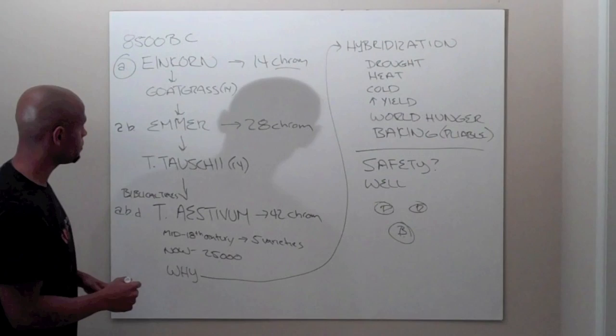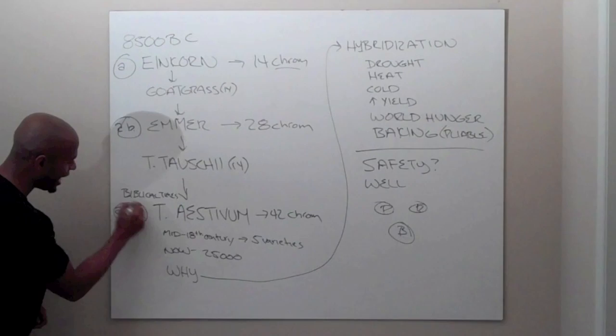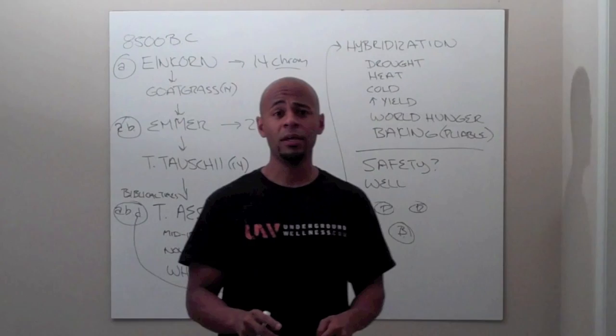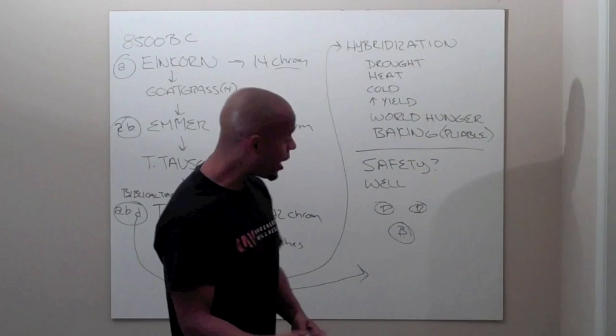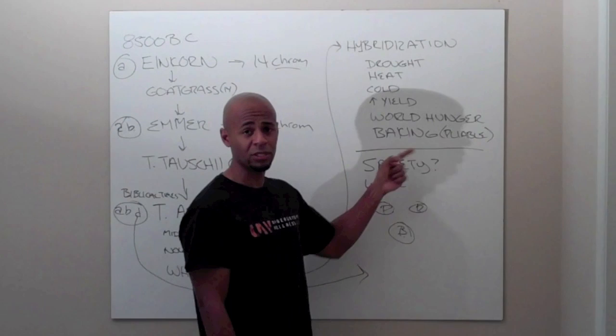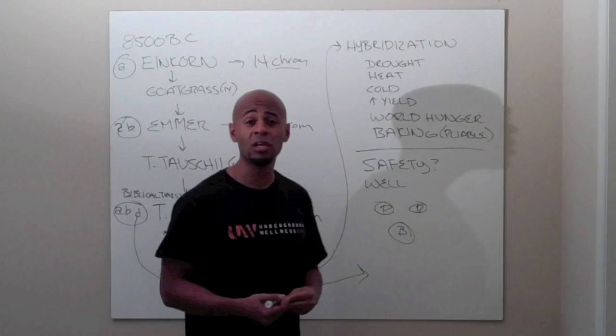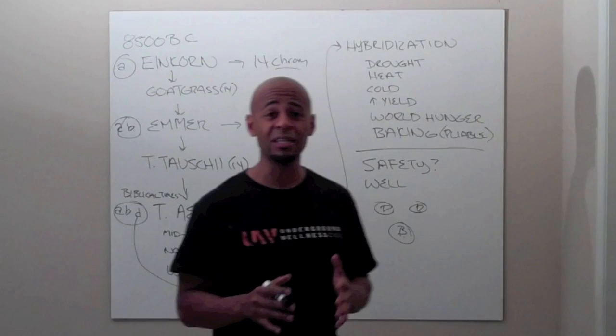A genome with einkorn, Emmer has A and B genome, Triticum estevum has A, B, and D genome. That D, the D genome is what the scientists work on when they're doing the hybridization. That's what they're targeting. Why? Because the D genome is what is going to confer those baking characteristics. However, at the same time, we see that that D genome is the source of the gluten proteins that trigger celiac disease.